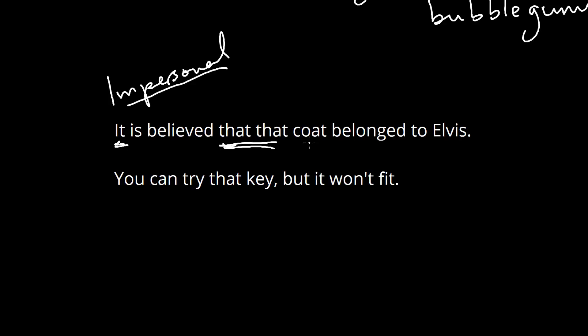Now we also have two that's, so this gets rather confusing. But if we look at it closely, we can see that the second one is the demonstrative one. And that's because we're pointing to that coat, right? We're talking about that one. Whereas this that is relative. And now we're introducing more information. It is believed that, and now, you know, this whole next clause comes into focus.